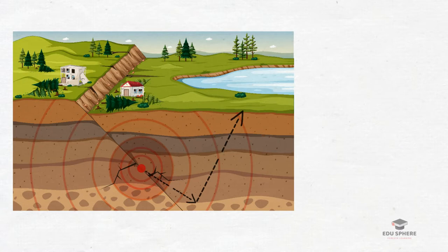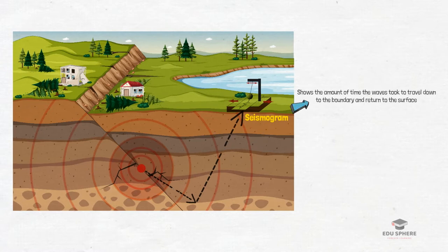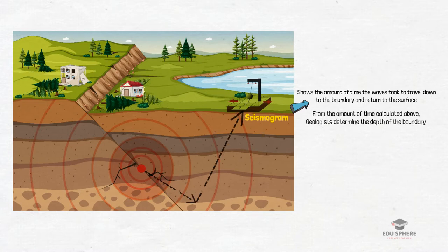If two rock layers of differing densities are separated by a fairly sharp boundary, seismic waves reflect off that boundary just as light reflects off a mirror. These reflected waves are recorded on a seismogram, which shows the amount of time the waves took to travel down to the boundary and return to the surface. From the amount of time necessary for the round trip, geologists calculate the depth of the boundary. These reflected seismic waves can be used to image geologic structures deep within the crust and the mantle that are not exposed at the surface.